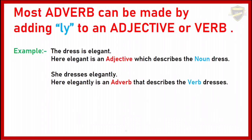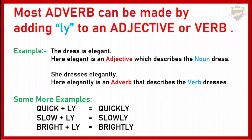Children, remember — most adverbs can be made by adding '-ly' to an adjective or verb. For example: 'The dress is elegant' — here 'elegant' is an adjective describing the noun 'dress.' 'She dresses elegantly' — here 'elegantly' is an adverb describing the verb 'dresses.' More examples: quick + ly = quickly, slow + ly = slowly, bright + ly = brightly.